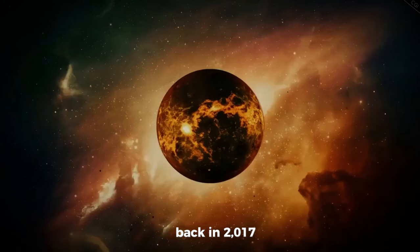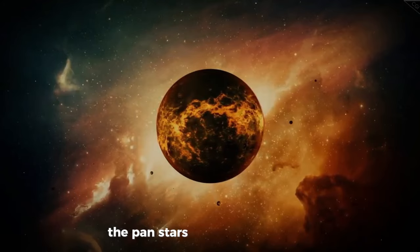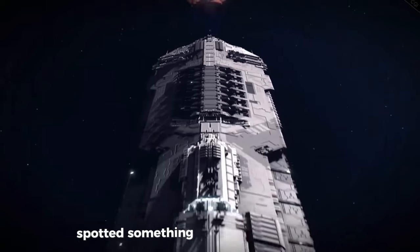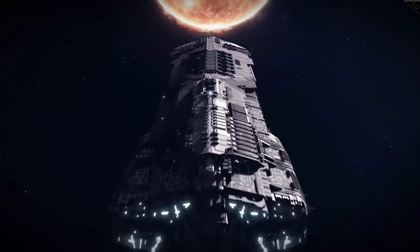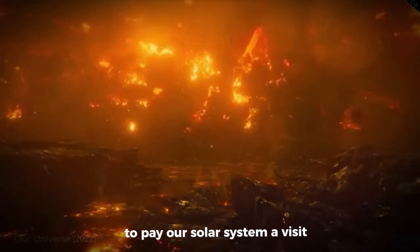Back in 2017, the astronomy world got a massive surprise. The Pan-STARRS 1 telescope in Hawaii, which is always on the lookout for strange events happening around the universe, spotted something totally out of the ordinary. It was Oumuamua, the first ever observed interstellar object to pay our solar system a visit.